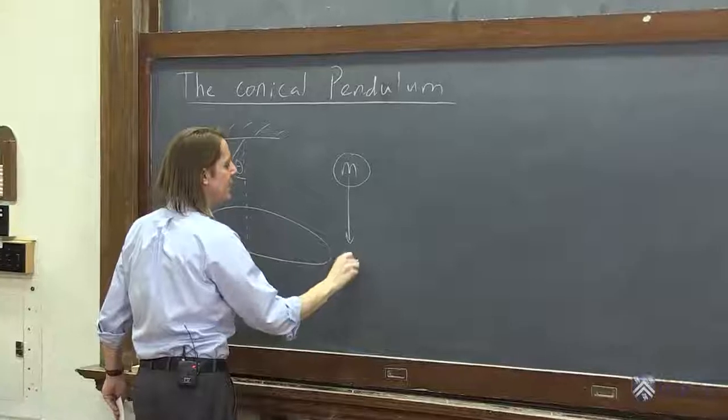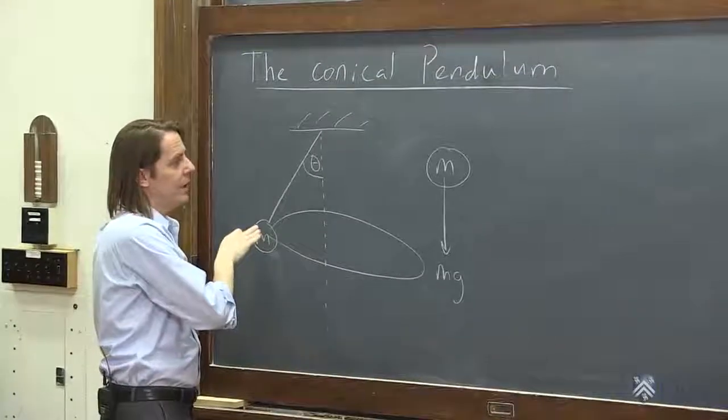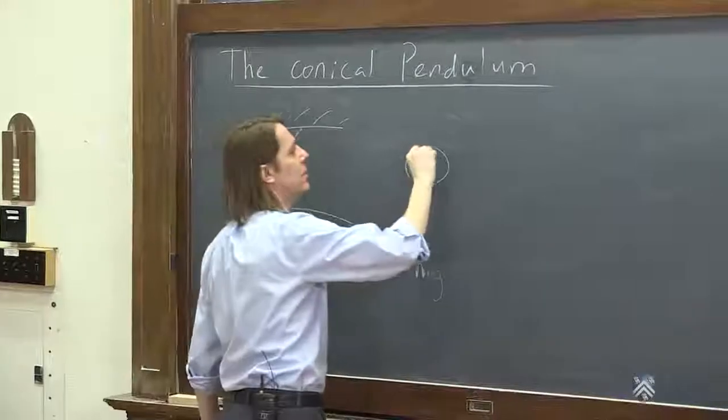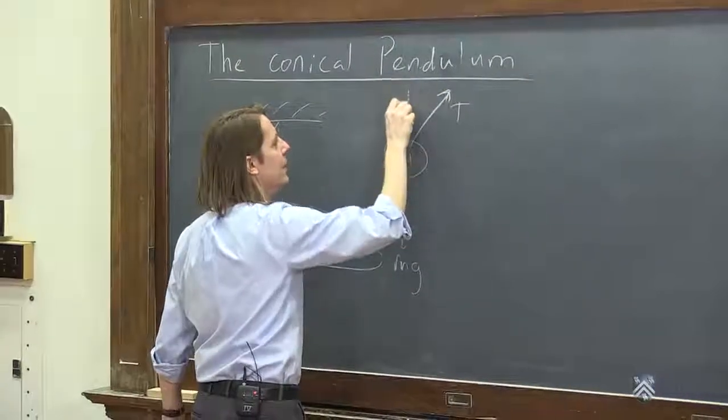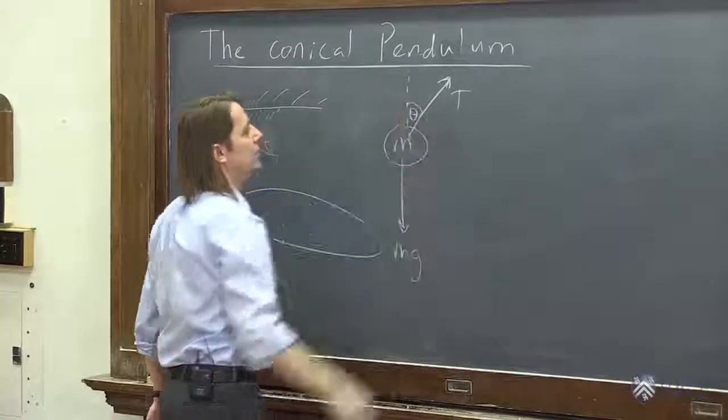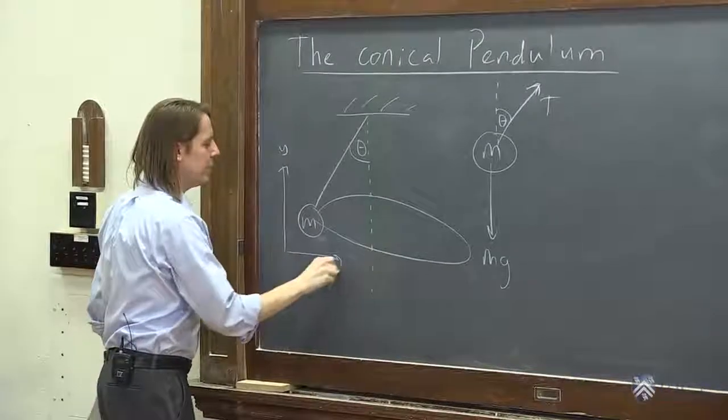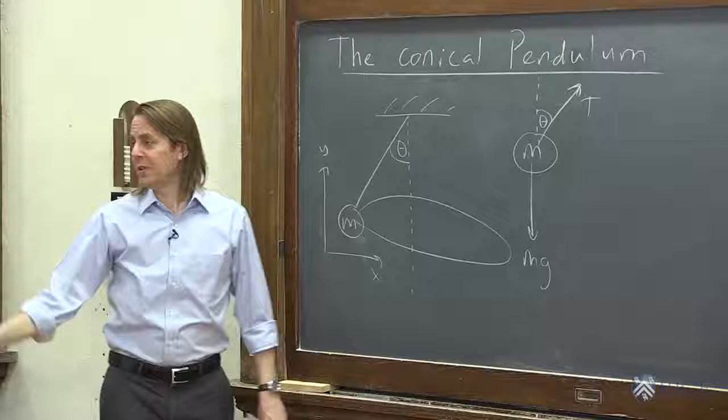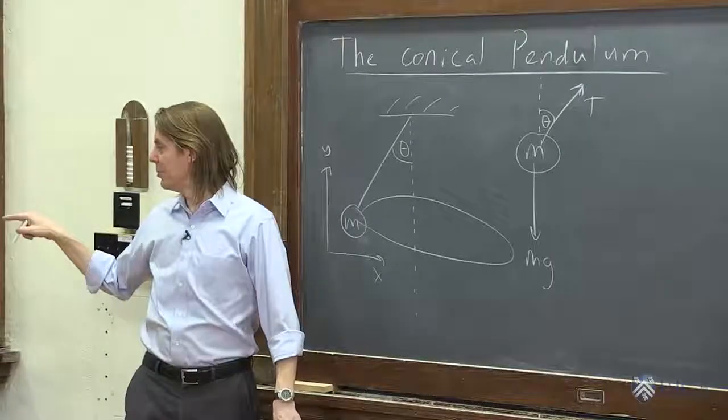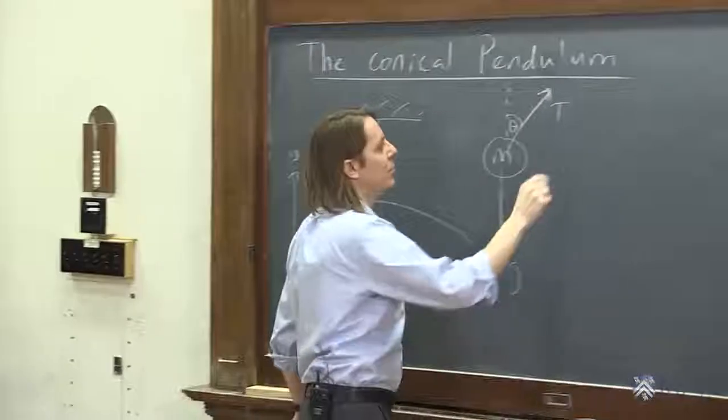We have mg down, and the tension force is the other force, tension from the string, and it's always along the direction of the string. So there's the tension vector, and if that's the vertical, it's also at theta. We're going to do this in Cartesian coordinates y and x. No acceleration in the y. So we'll start there.